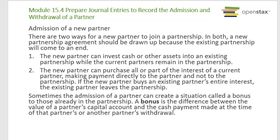For example, Bob and Jim are in business together and Paul can come in and buy Jim's piece of the business. Sometimes the admission of a partner can create a situation called a bonus to those already in the partnership — the difference between the value of the partner's capital account and the cash payment made at the time of that partner's or another partner's withdrawal.